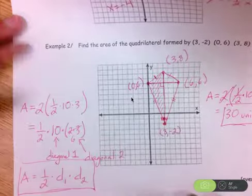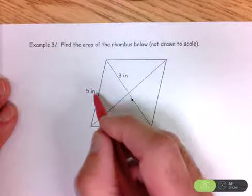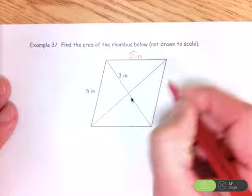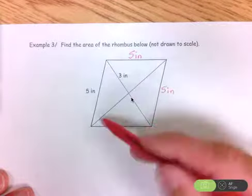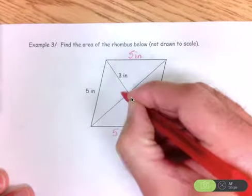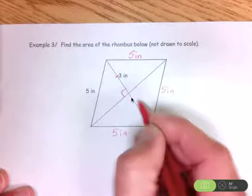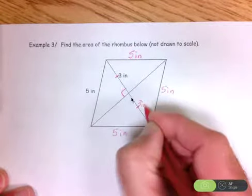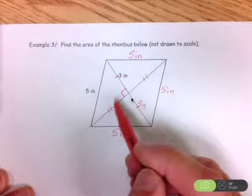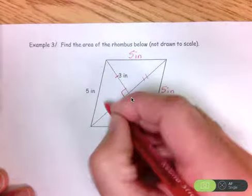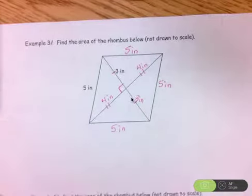Now turn your handout over. This is a rhombus — all four sides are congruent. Another important rhombus property is that the diagonals meet at a right angle and they bisect each other. So I know these two pieces are each three inches, and I hope you recognize the three-four-five Pythagorean triple — so these pieces are each four inches.